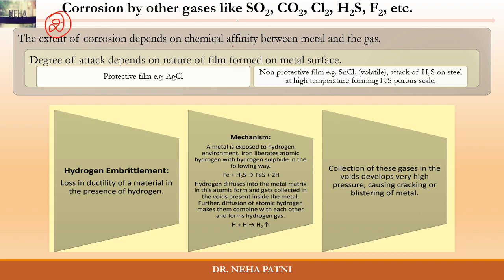The second type says corrosion can occur in the presence of other gases, not only oxygen. The extent of corrosion depends on the degree of attack, which depends on the nature of the film. If the film is protective, just like silver chloride, further corrosion will not take place. But if the film is non-protective, the same rule applies.